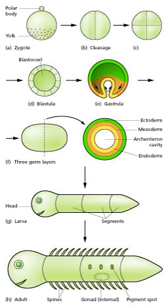The main processes involved in the embryonic development of animals are regional specification, morphogenesis, cell differentiation, growth, and the overall control of timing explored in evolutionary developmental biology.